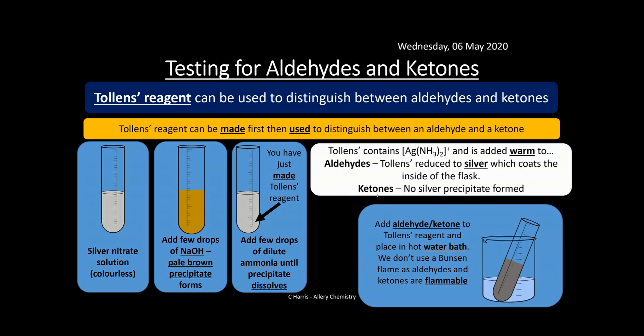Tollens' reagent contains the complex [Ag(NH₃)₂]⁺ — silver in the middle with two ammonia ligands around it, making it a linear complex. It's added warm to the substance being tested. If an aldehyde is present, you get a silver mirror — hence it's also known as the silver mirror test. If a ketone is present, there is no precipitate and no visible change. This test is really good for distinguishing aldehydes from ketones.